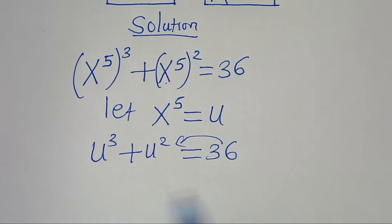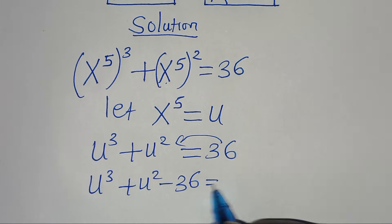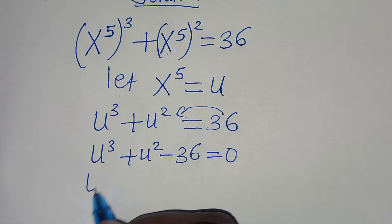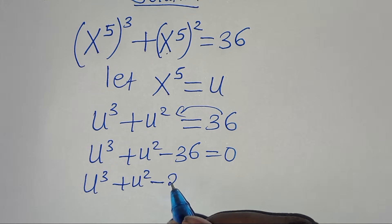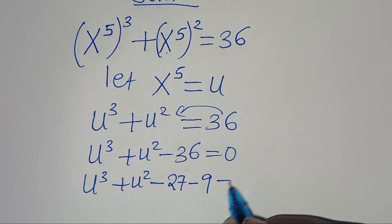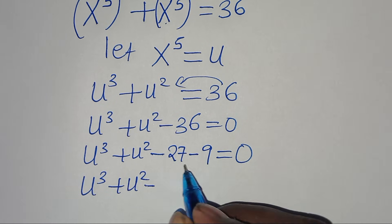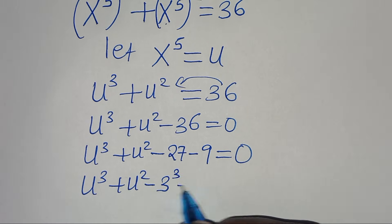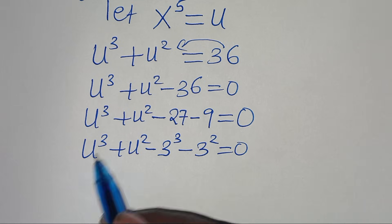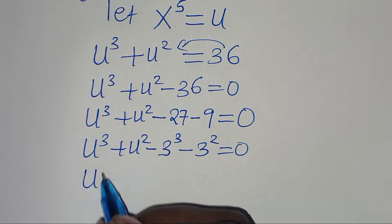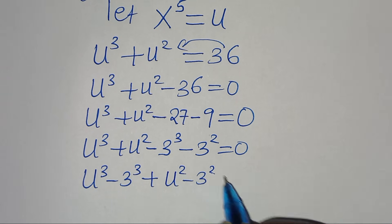Taking 36 to the left-hand side, we have u^3 plus u^2 minus 36 equals 0. We can express minus 36 as minus 27 minus 9, giving u^3 plus u^2 minus 27 minus 9 equals 0. Recognizing that 27 is 3^3 and 9 is 3^2, this becomes u^3 minus 3^3 plus u^2 minus 3^2 equals 0.